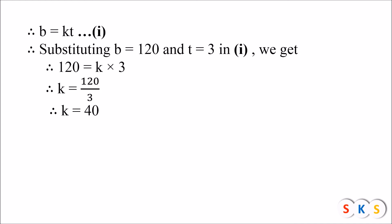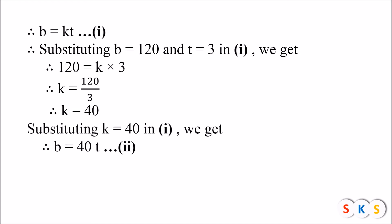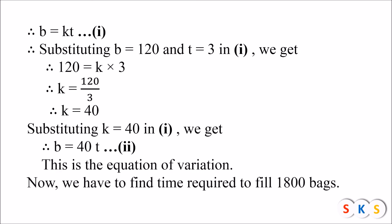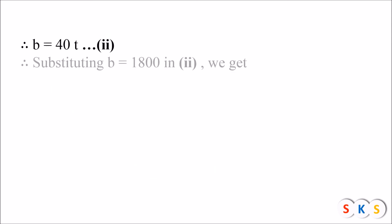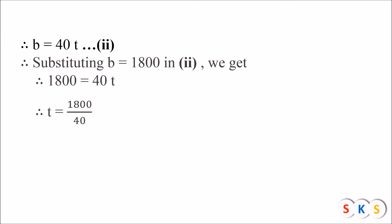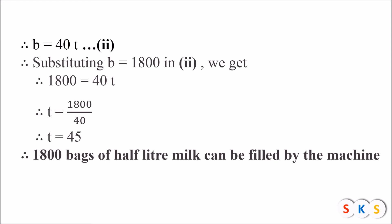Replacing k by 40, the equation becomes b = 40t. This equation helps us find the time taken by the machine to fill 1800 bags. So here b = 1800; substituting in the equation gives 1800 = 40t, so t = 1800 ÷ 40 = 45. Therefore 1800 bags of half-liter milk can be filled by the machine in 45 minutes.